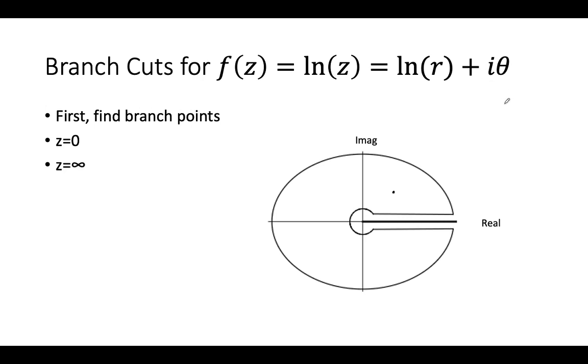z equals infinity is also a branch point, because ln of 1 over z is just negative ln of z. So it has the same set of branch points as the other function does.